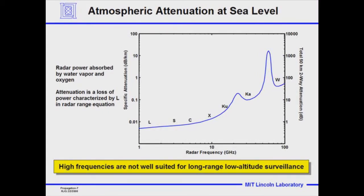It varies all over the world. If you're in a rain forest there'll be naturally more moisture in the air than in the Sahara Desert where there's very little moisture. In a hot desert where the temperature is higher at sea level versus the Arctic where it's cooler, the attenuation would be different. So there's a geographical change that's somewhat different.